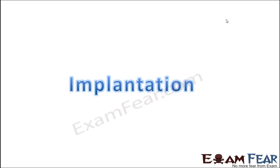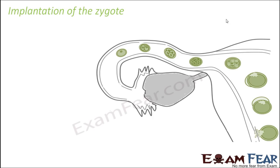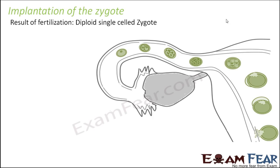The zygote is formed and will have to move from the fallopian tube to the uterus. Not only that, in the uterus it should get implanted — that is, it should get fixed there. So how will it get fixed in the uterus? Let us have a quick look at the implantation of the zygote.